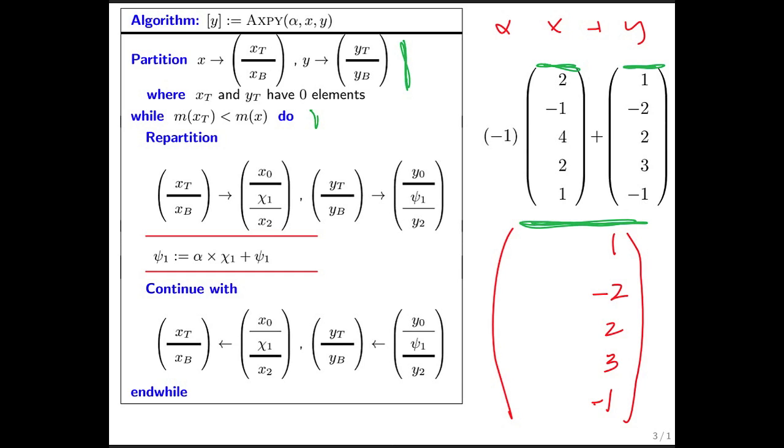The algorithm then checks whether we're done, which we're not. And then it repartitions the top and bottom parts, exposing the top elements of the bottom parts. Well, we expose this.